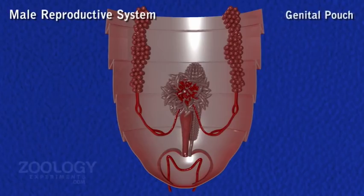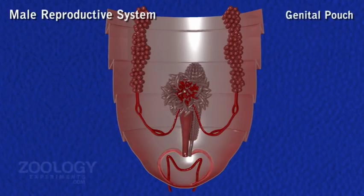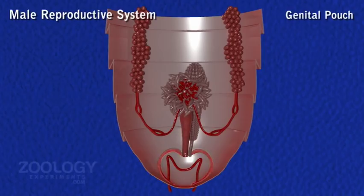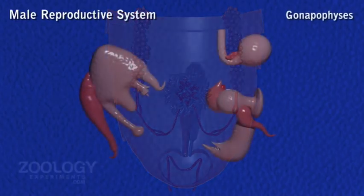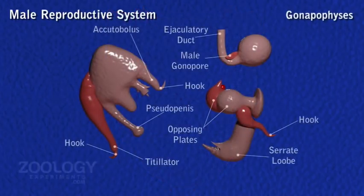Genital Pouch. The genital pouch of cockroach lies at the posterior end of the abdomen. It is surrounded dorsally by the 9th and 10th tergia and ventrally by the 9th sternum. It contains the dorsal anus, ventral male genital pore, and gonapophysis. Gonapophysis is present in the genital pouch and helps in copulation, consisting of three small irregular chitinous structures.